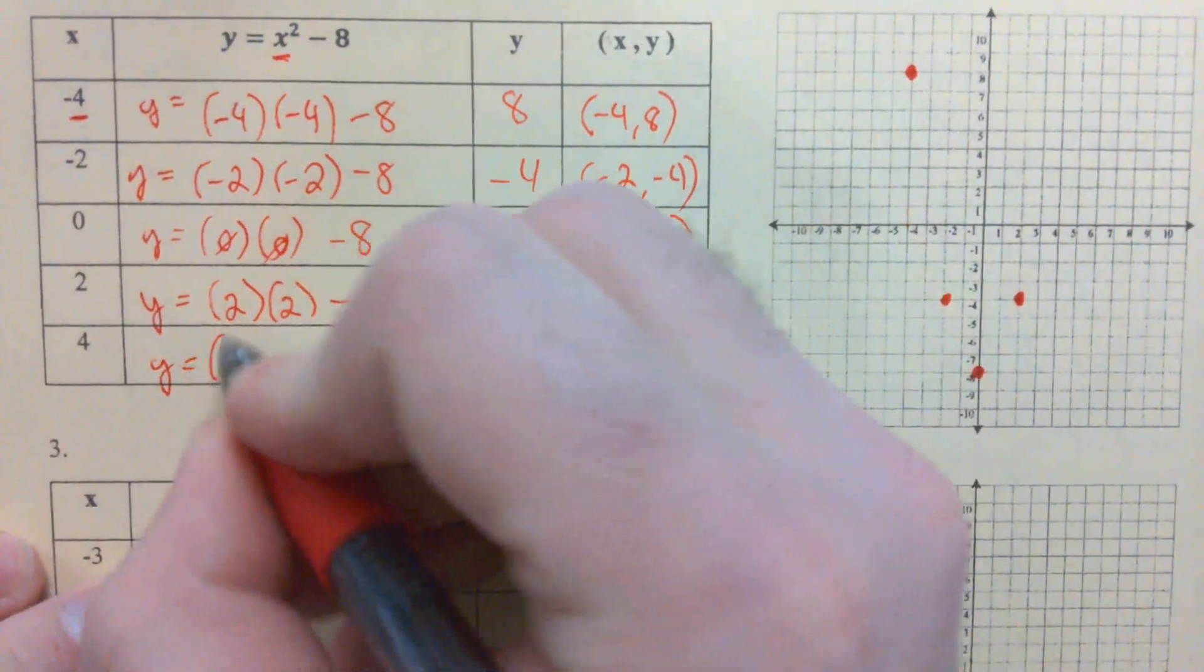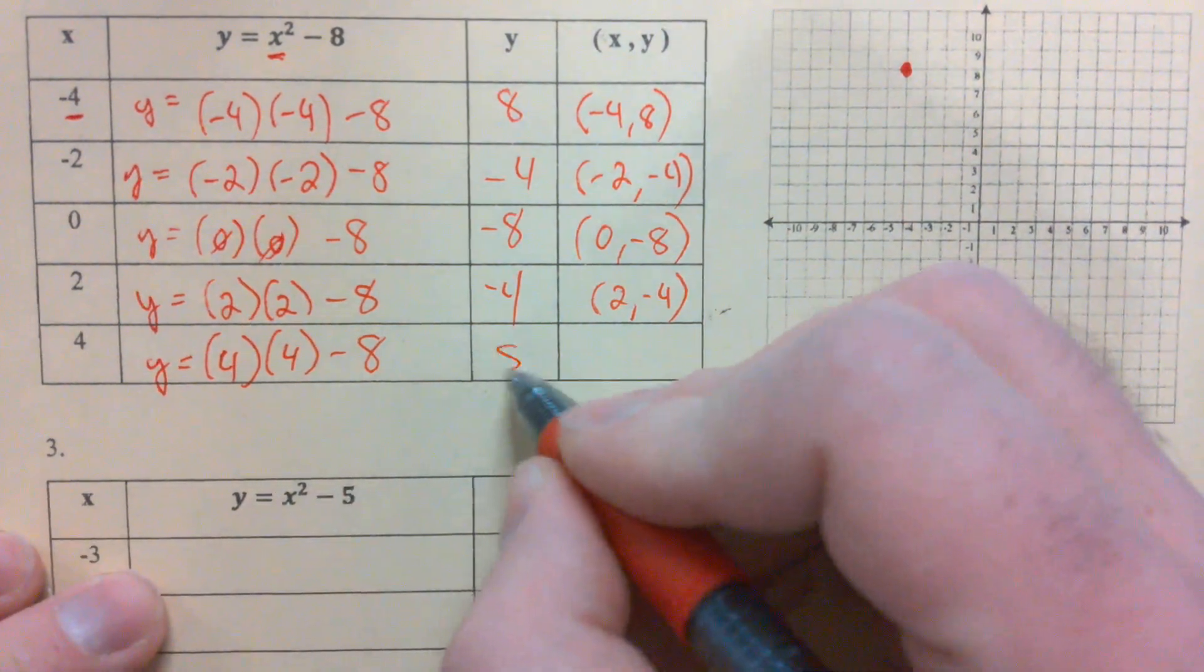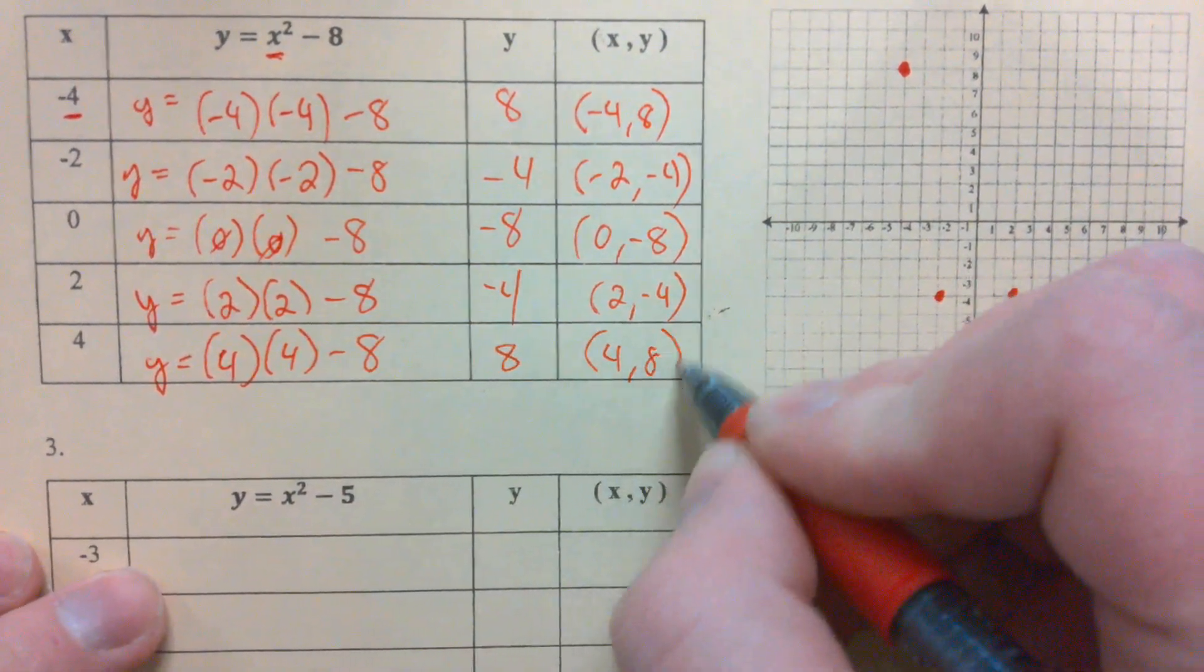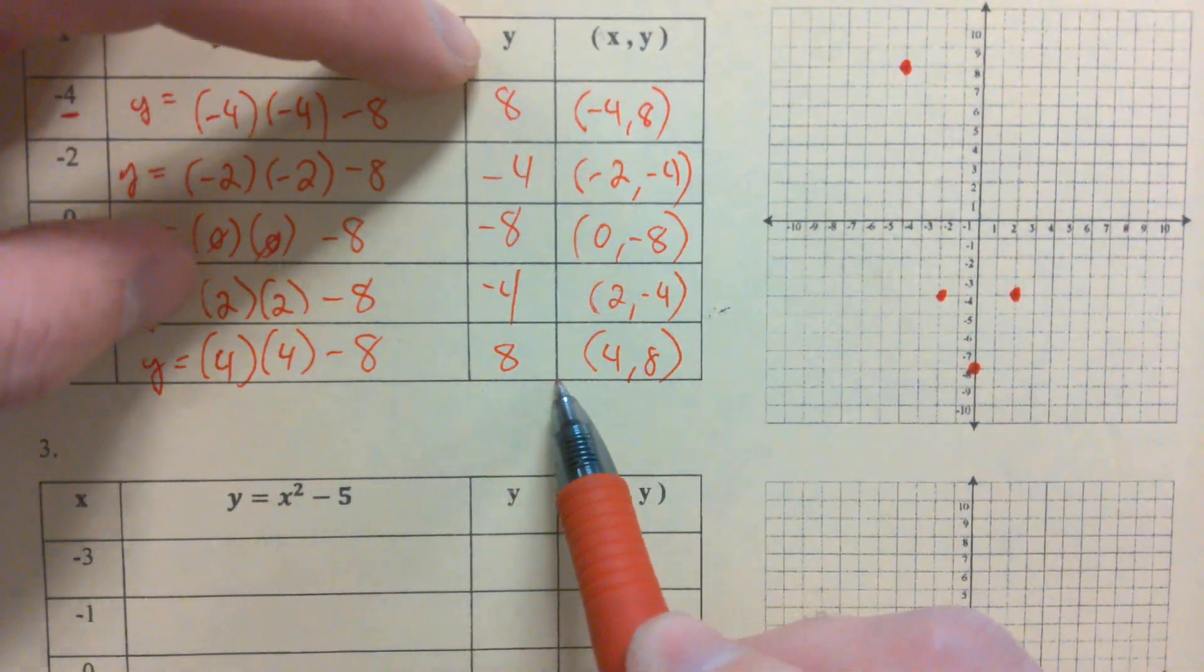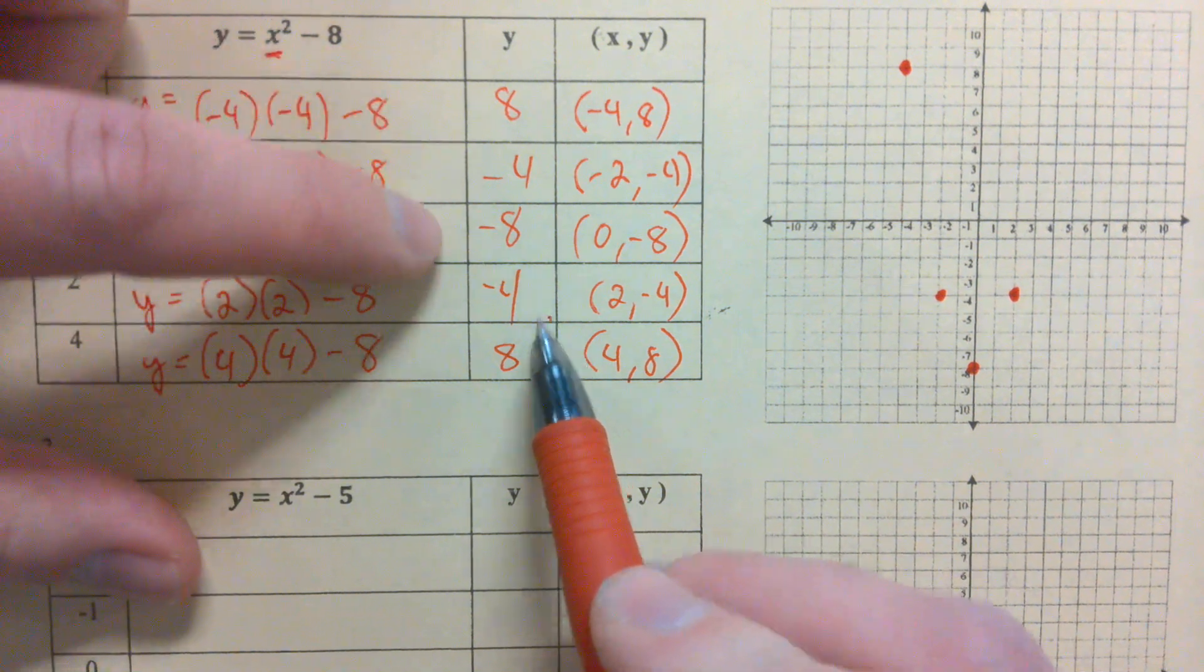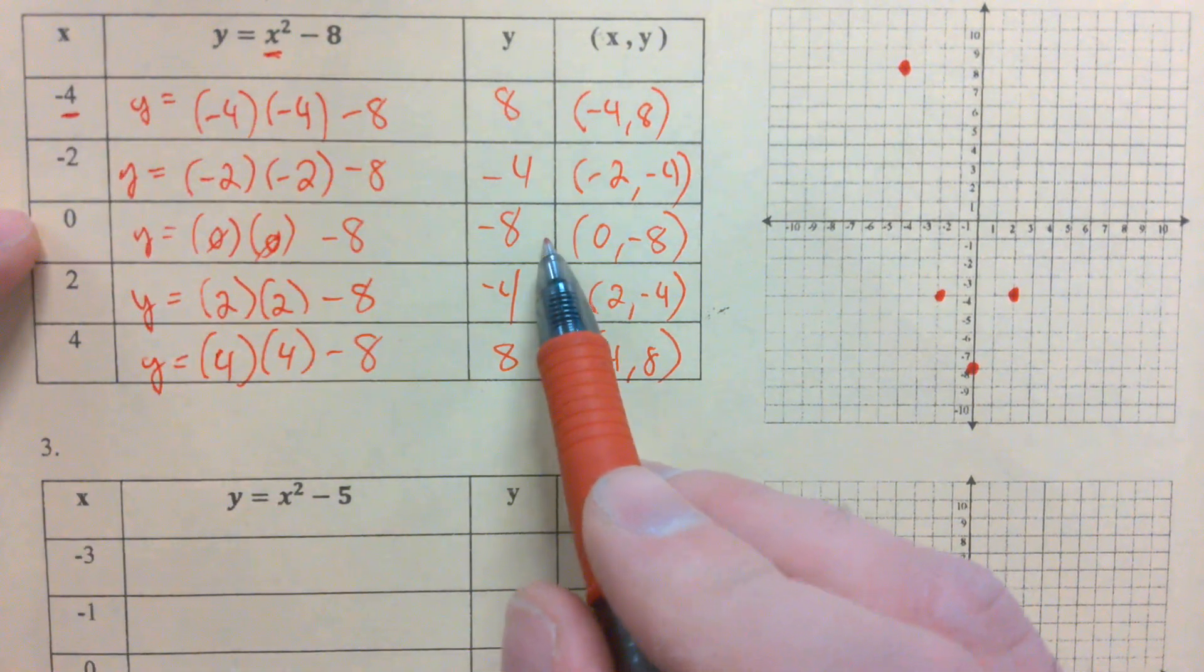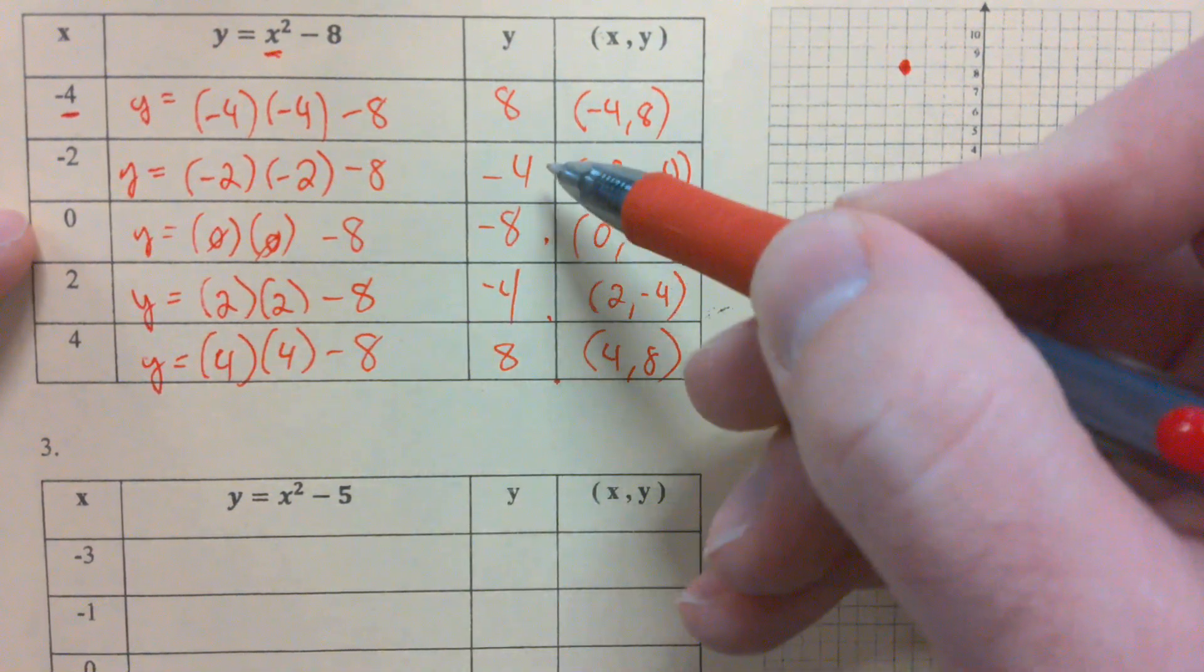Last but not least, we plug in 4. 4 times 4 is 16. 16 minus 8 is 8. So like we saw yesterday, my first and last outputs are the same. My second and second-to-last outputs are the same. And my y-intercept at 0 in the middle is its own number. It's okay for us to have repeating outputs. We just cannot have repeating inputs.